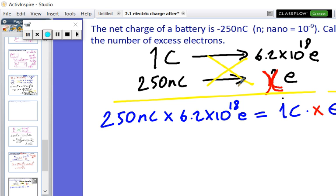...and the cancelling out of coulombs would be nice as well. So I am going to be left with nano, which is 250 times 1 nano is indeed 10 to the power minus 9...